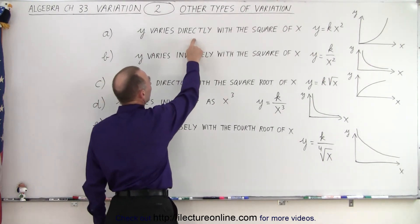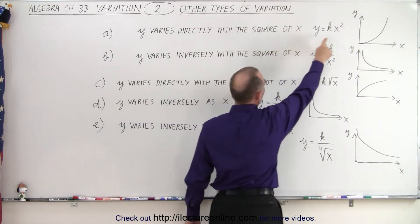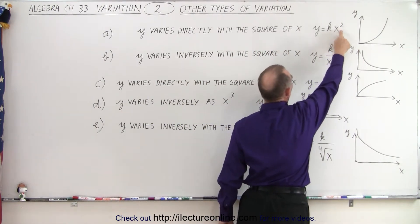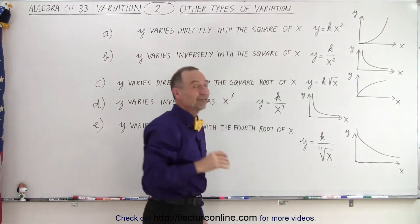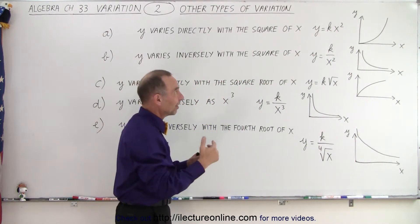Y varies directly with the square of X. So directly means X goes in the numerator and it's X squared, which means as X gets bigger, Y gets bigger even faster because Y varies as X squared.